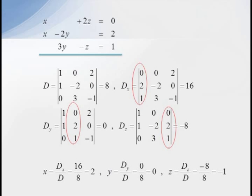So finally, by Cramer's rule, X equals DX over D, which is 16 over 8, or 2. Y equals DY over D, which is 0 over 8, which equals zero. And Z is equal to DZ over D, which is negative 8 over 8, which equals negative 1. Thus, our final solution is the ordered triple 2, 0, negative 1.